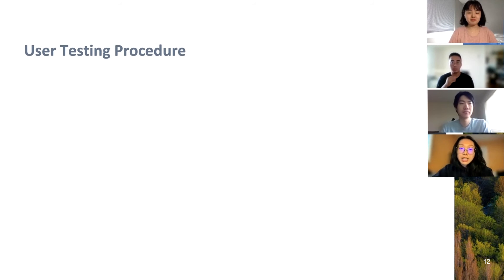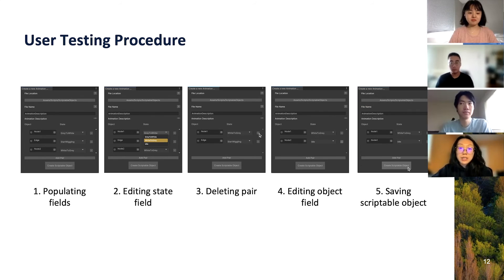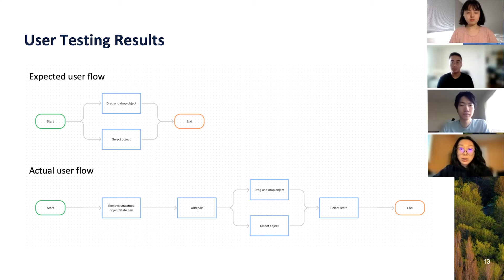We conducted user testing with participants that have varying experiences with Unity, specifically with creating animations. Each session involved participants completing tasks using the custom window we had created for making Scriptable Objects. All participants successfully changed an object in an object-state pair. However, everyone experienced difficulties because they expected the object field to be directly editable, but given limitations with implementing the window, this was not possible. We may consider alternative solutions that allow users to change the object more easily, as well as providing more instructions to help them understand the workaround for editing the object field.